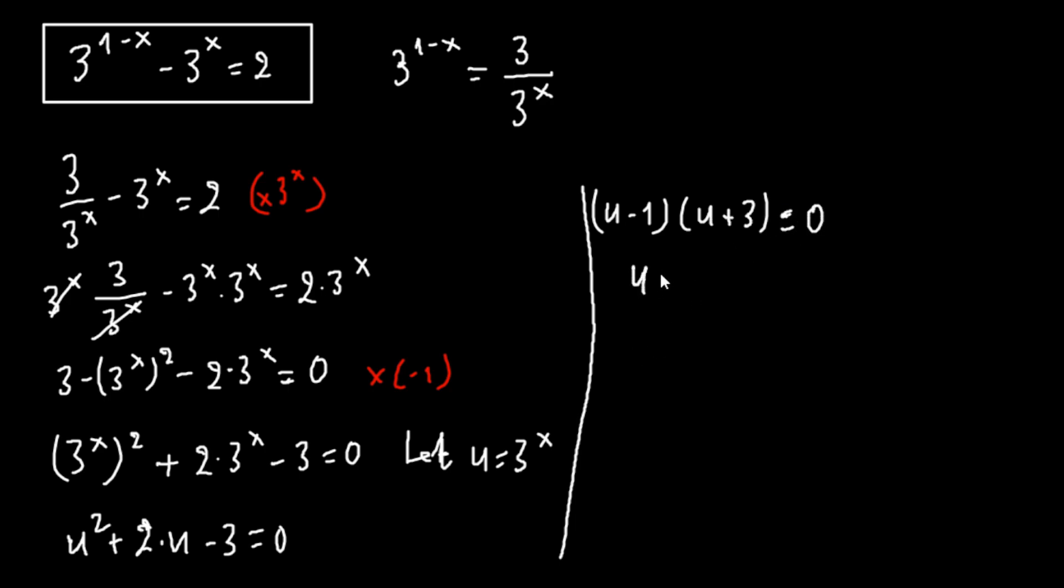Now we have that u equals 1 or u equals minus 3. Let's take the first one. u is 3 to the x, so we have 3 to the x equals 1. 1 can be written as 3 raised to the 0, so x equals 0 is one solution.